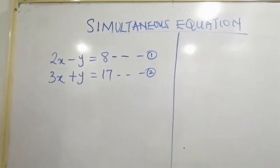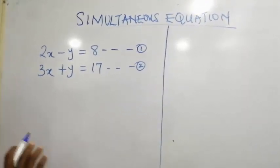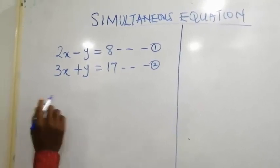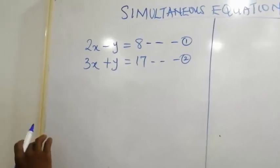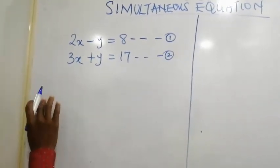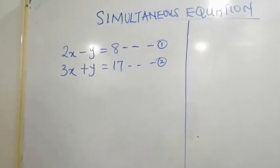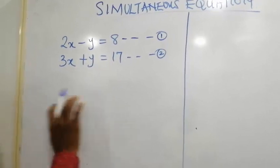But for today's class, I am going to make use of elimination method. There are rules to follow. The first rule is that you must first of all check the equation, the variable, to look at where they have the same coefficient. And it will be very easy for you to eliminate at that point.